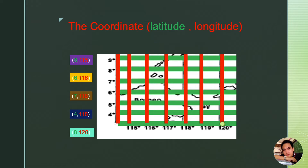Let us take the first coordinate as an example: coordinate 8, 115. This means we are going to locate the point or position where latitude 8 and longitude 115 meet. Do you know the correct answer? Don't worry if you got it wrong — always bear in mind that nobody is perfect and that having mistakes is part of the process of learning. And if you got the correct answer and the correct position, well done!